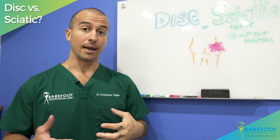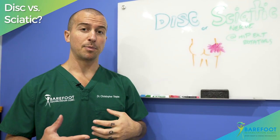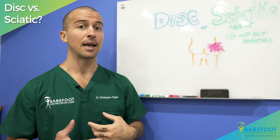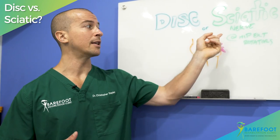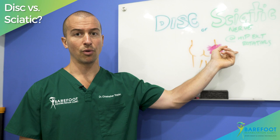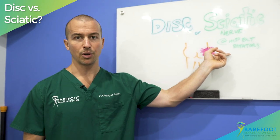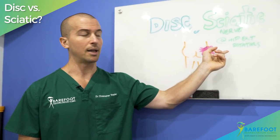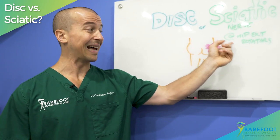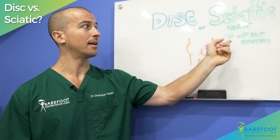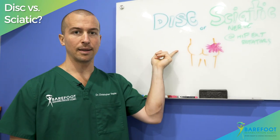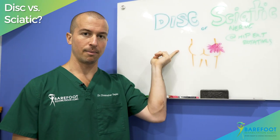If you're walking and you have this pain, especially if you're taking longer strides and you feel the butt pain, it's more likely sciatic nerve at the hip external rotators. If you're taking really short strides and standing up straight, then it's less likely the sciatic nerve at the hip external rotators and more likely a disc problem.